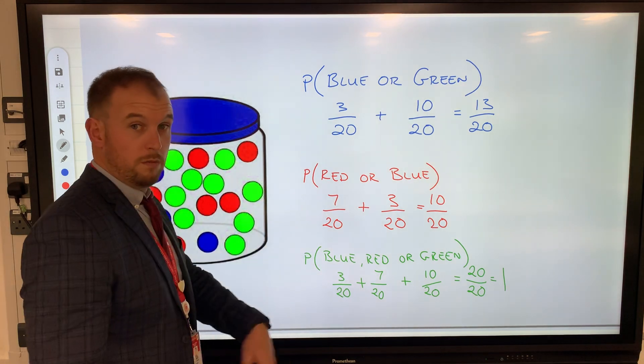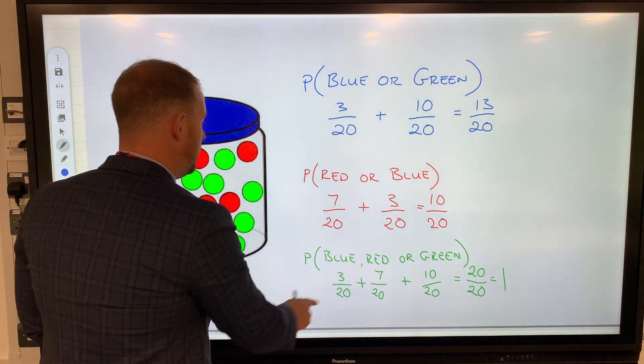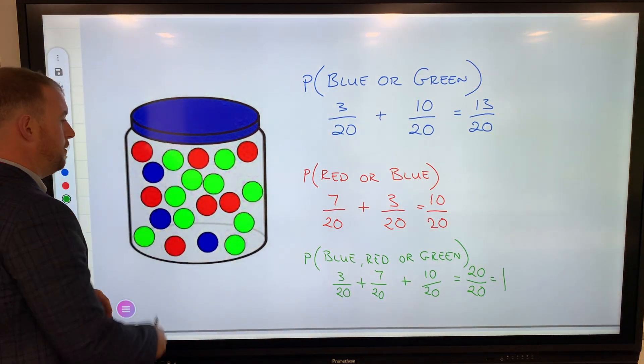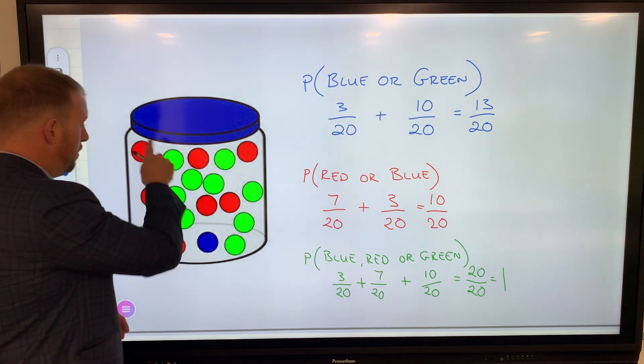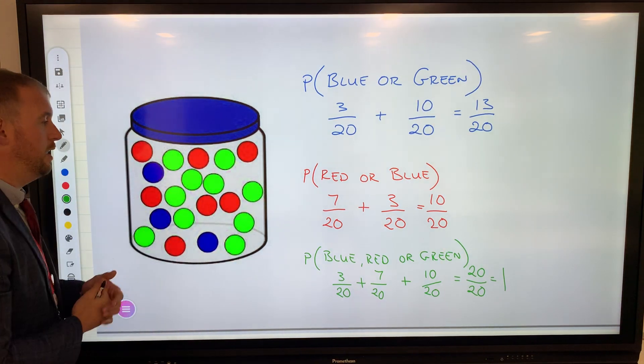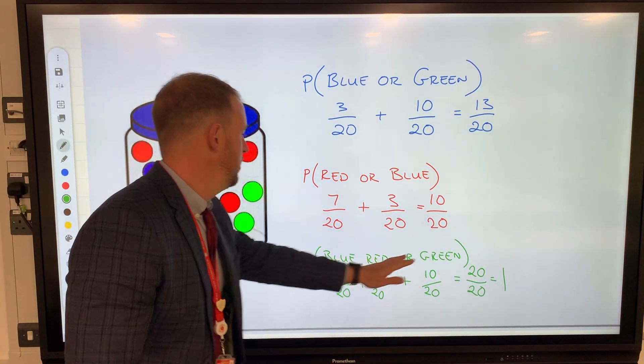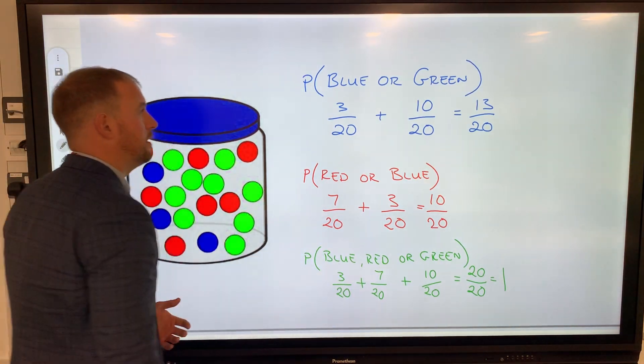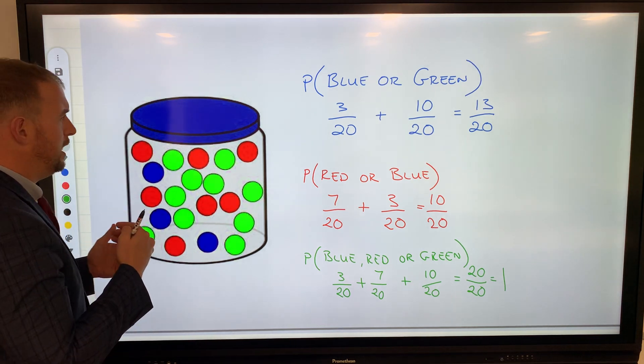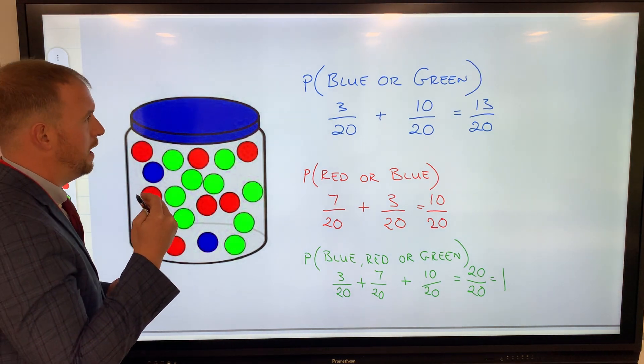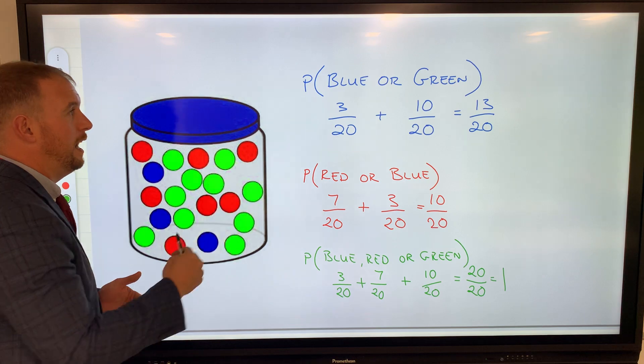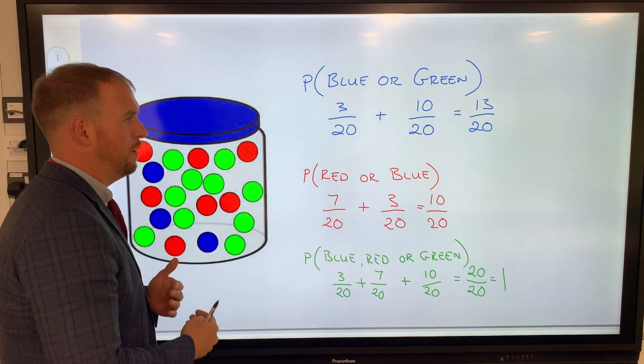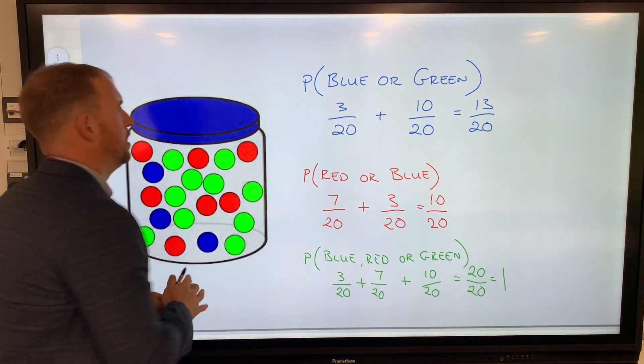It's certain that we're going to select either blue, red, or green because obviously there are no other colors. That just shows why we have to add the fractions. We add when it says the word 'or', and multiply when it says the word 'and'.